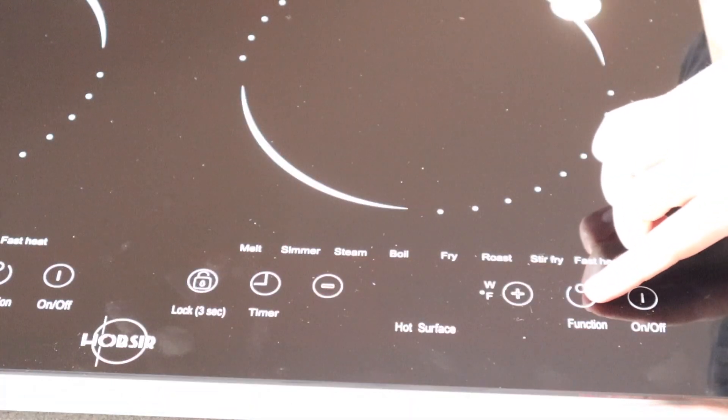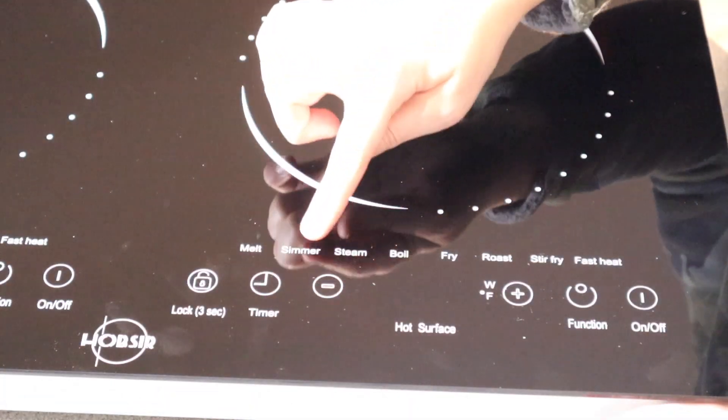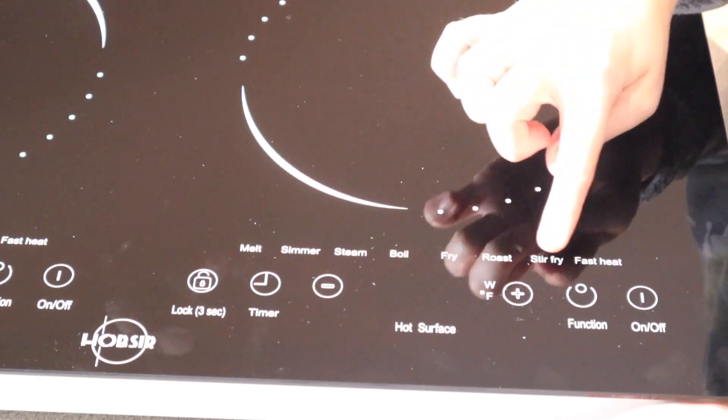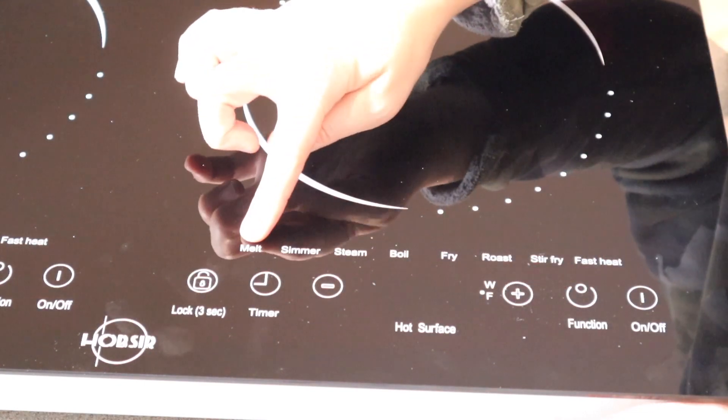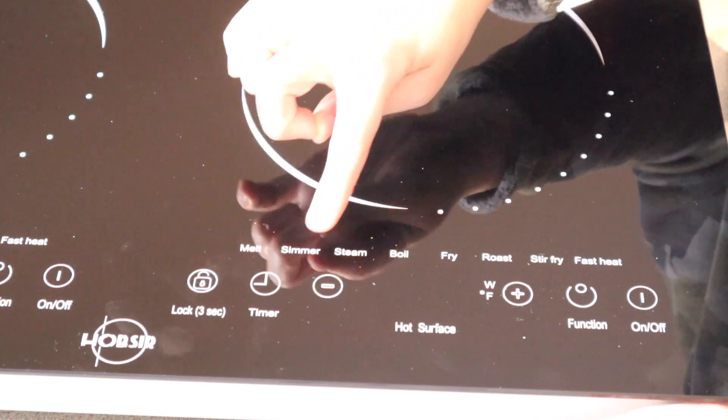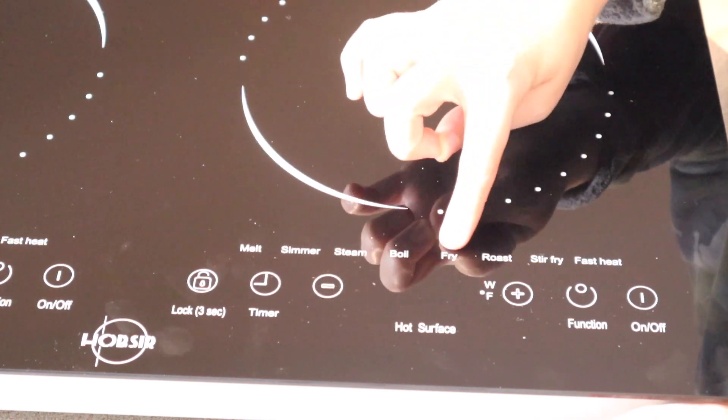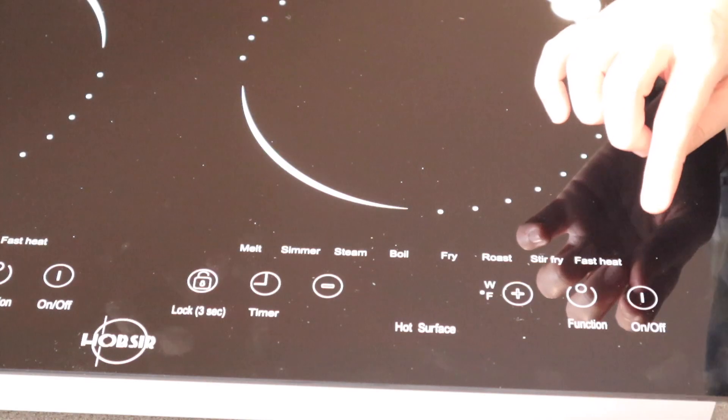And then right over here is the function button, and that's going to alternate between any of these preset functions that you'd like to select. If you start over here on this side, we have melt, simmer, steam, boil, fry, roast, stir fry, and fast heat.